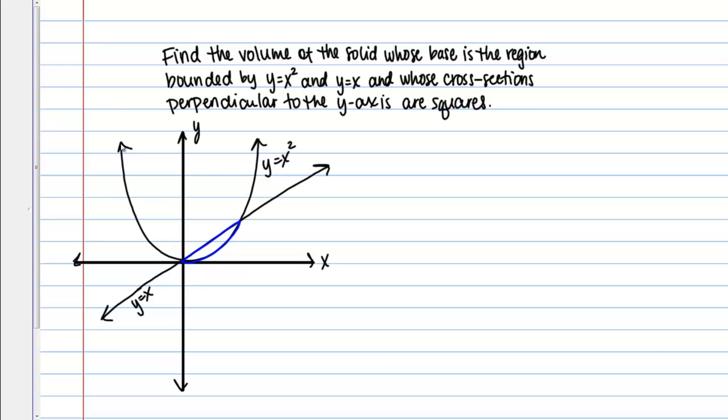The way that this three dimensional solid is formed is by these square cross sections that sit on top of this base. We're told that we have cross sections perpendicular to the y-axis. So if they're perpendicular to the y-axis, those cross sections are going to be going in this direction, in the horizontal direction.